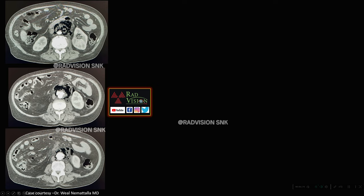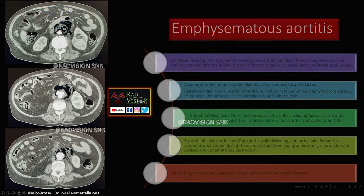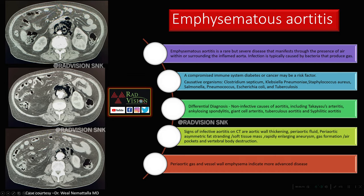Next case: here you can see the aorta with thickening of the aortic wall and an aneurysm arising from the right lateral aspect, surrounded by free air. Multiple free air pockets are seen surrounding the aorta. This is a case of emphysematous aortitis — defined as the presence of air or free air surrounding an inflamed aorta. The most common causative organisms are gas-producing bacteria such as Clostridium and Klebsiella.